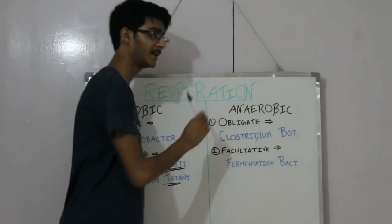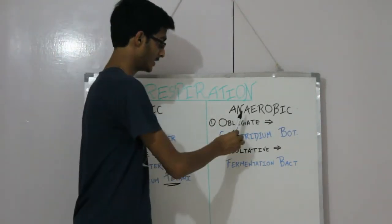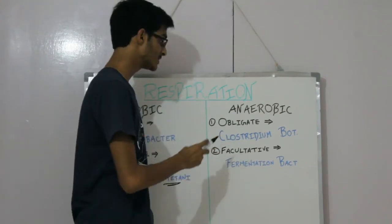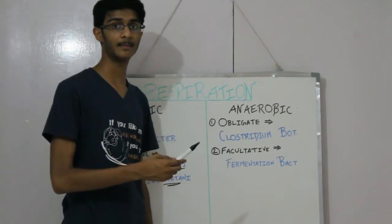Now let's go on to the anaerobic bacteria. They are classified into two types: obligate and facultative. Obligate - Clostridium botulinum is an example of it.